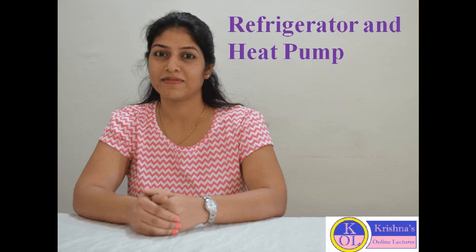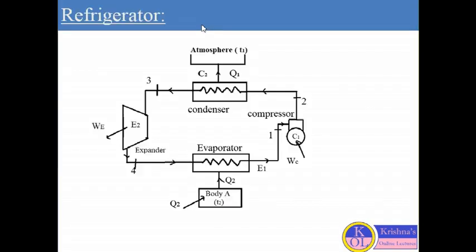Hello students, today I will discuss about refrigerator and heat pump. The working of the refrigerator is just opposite of heat engine. So we can say the refrigerator is a device which is operating in a cycle which maintains the body at lower temperature than the temperature of atmosphere or temperature of surrounding. Here we are considering this diagram is the perfect example of the working of refrigerator.